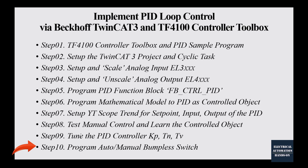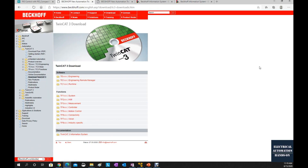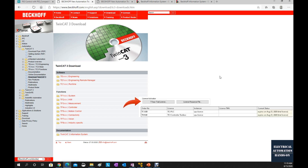That bumpless switch will be very useful if you are doing a project in a practical or actual industry process. To use a PID controller from the Beckhoff TwinCat3 software, we need to download one additional software — the TF4100 controller toolbox — which requires a license to purchase. First, download the TwinCat3 software, which is free. For learning purposes, you also have a seven-day trial license. After seven days, you can activate the trial license again and continue to use it, which is very useful for learning.